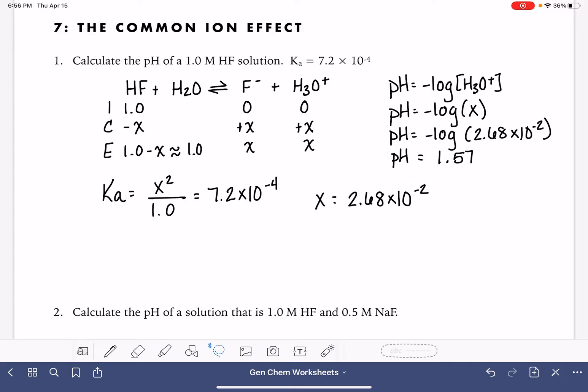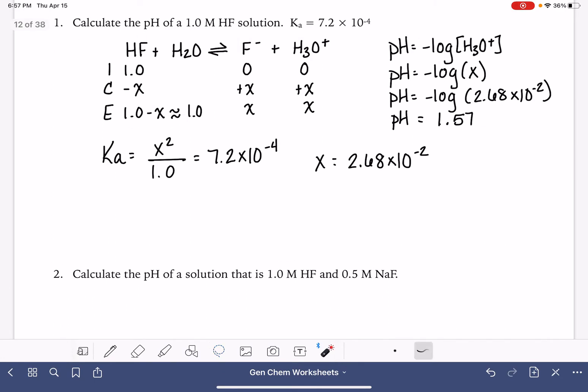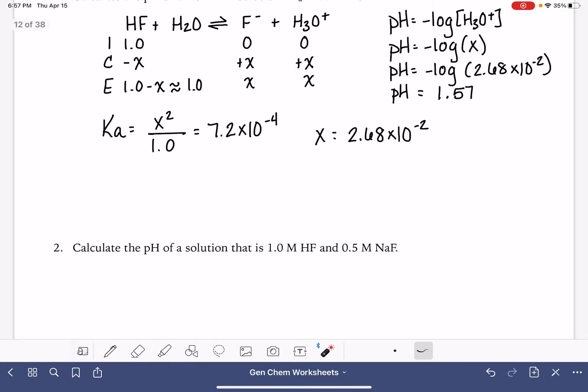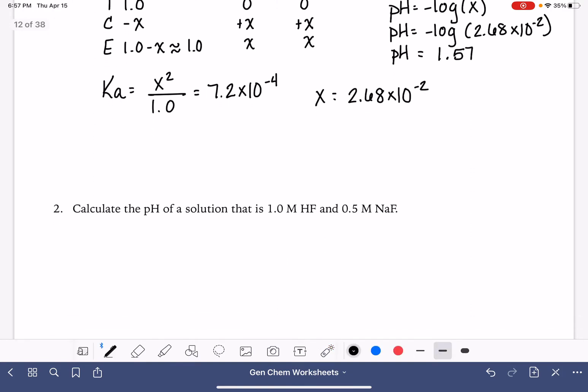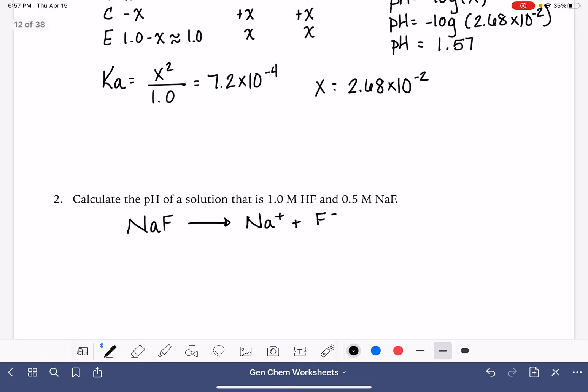Now what we're going to do in our second problem is recalculate the pH of this exact same acid, except for in this scenario, we have 0.5 molar NaF. So the first thing that we want to do is look at the NaF. That's an ionic compound. So when we put it into water, it dissociates to make the sodium ion and the F minus ion. And the F minus ion is going to be our common ion.